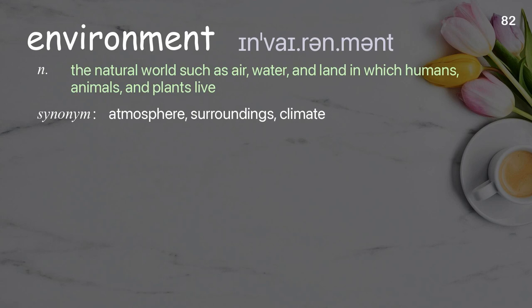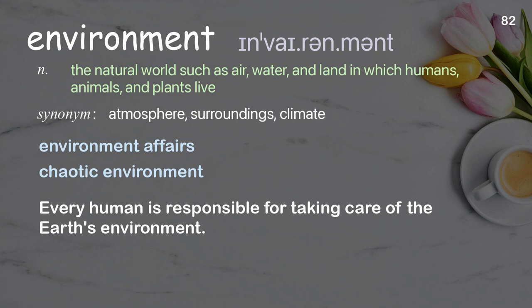Environment: the natural world, such as air, water, and land, in which humans, animals, and plants live. Examples: environment affairs; chaotic environment; every human is responsible for taking care of the earth's environment.